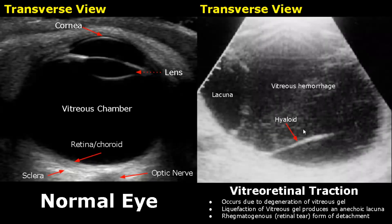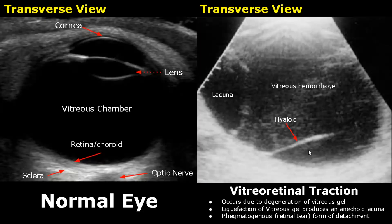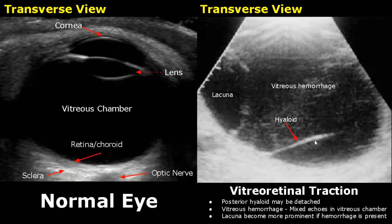Vitreoretinal traction can occur in elderly people as the vitreous gel starts to liquefy due to degeneration — a condition called synchisis senilis. This liquefied gel forms an anechoic lacuna. A hole can form in the thin vitreous membrane and fluid from the lacuna goes through this hole, pulling away the vitreous or hyaloid membrane from the retina. That is why it is called vitreoretinal traction, and it is also a rhegmatogenous form of detachment.